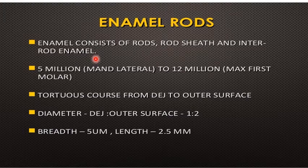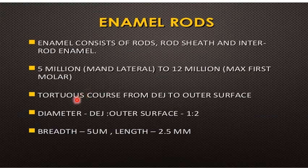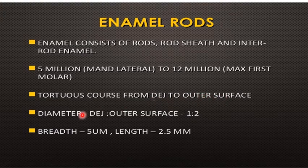Enamel consists of rod, rod sheath, and interrod enamel. There are 5 million of these rods present in the mandibular lateral tooth up to 12 million in the maxillary first molar. The rods follow a tortuous course from the dentino-enamel junction to the outer surface, with a smaller diameter near the dentino-enamel junction.